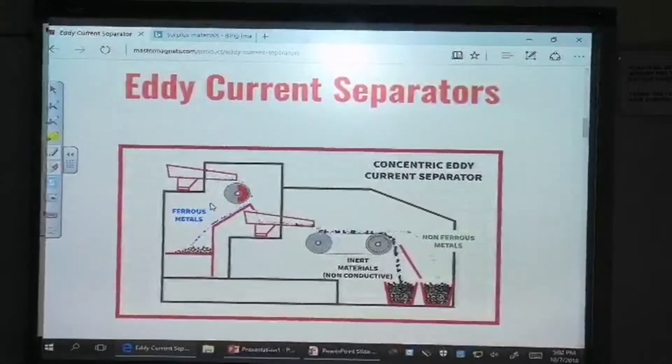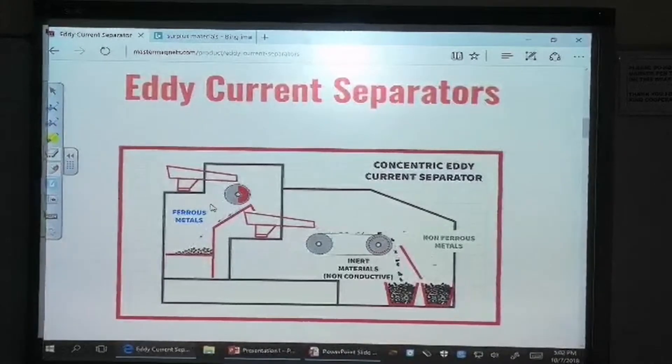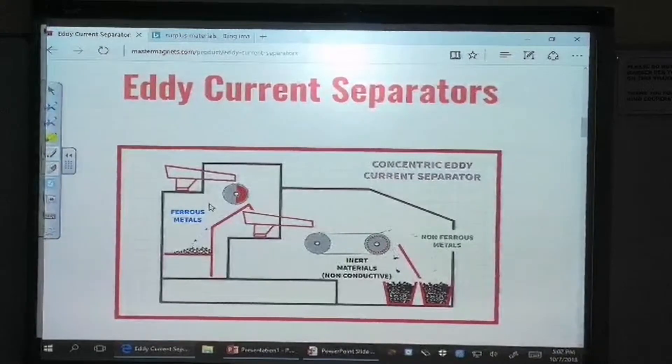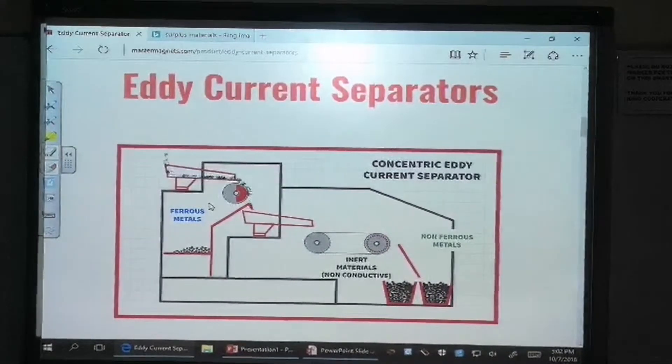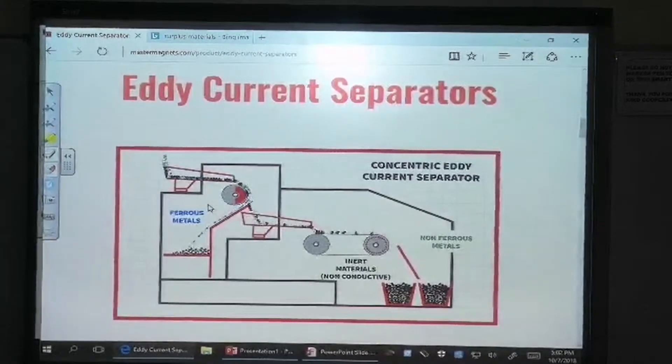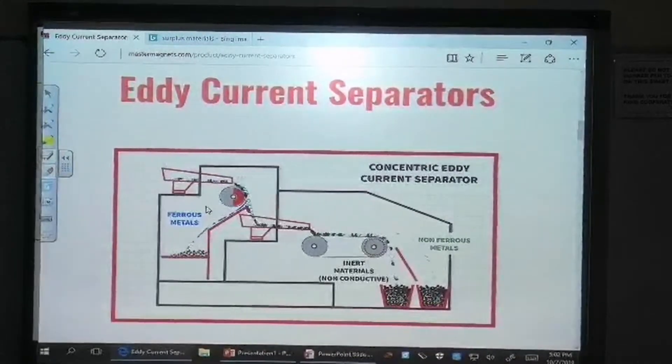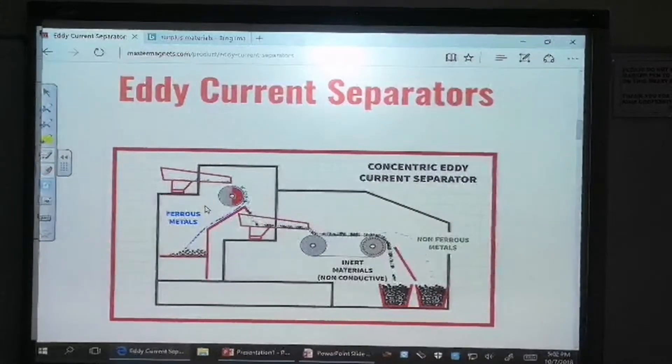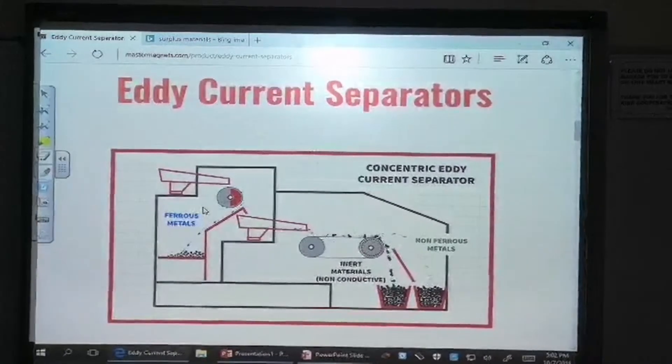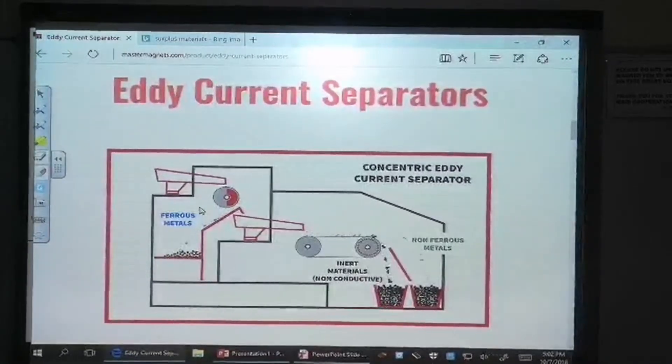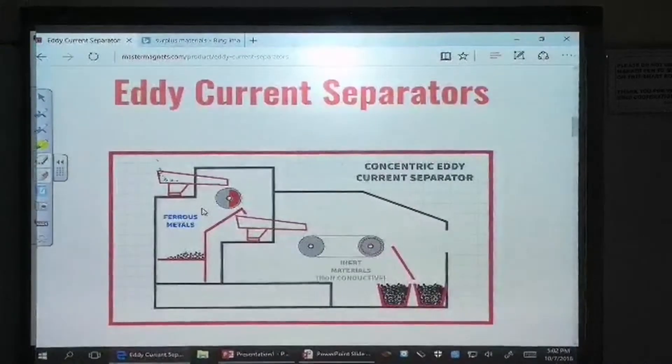The magnetic field of the non-ferrous metal particles interact with the magnetic field of the rotating drum. This interaction gives the non-ferrous metal particles kinetic energy and these particles are thrown off the end of the conveyor belt with a variety of energies, causing different trajectories depending on the conductivity of the particles. After all, the eddy current forces generally generated by the magnetic motor.